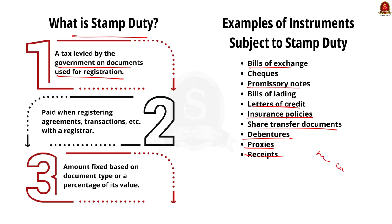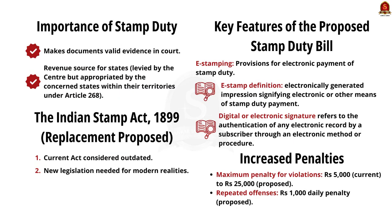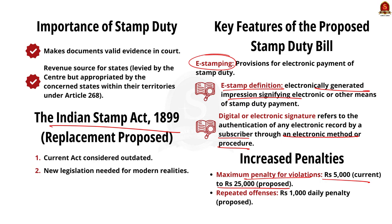Stamp duties are levied by the center but appropriated by the concerned state within their territories under Article 268 of the Constitution. The bill seeks to replace the Indian Stamp Act 1899, which has become redundant. The new legislation is expected to reflect present realities and objectives. In order to equip India for a seamless digital era, the bill includes provisions for digital e-stamping. It defines an electronic stamp or e-stamp as an electronically generated impression denoting the payment of stamp duty by electronic means. There are also provisions for digital signatures — defined as authentication of any electronic record by a subscriber through an electronic method or procedure. The draft bill also proposes to raise the maximum penalty from ₹5,000 to ₹25,000 for contravening any provisions of the law and impose ₹1,000 per day for repeated offenses.